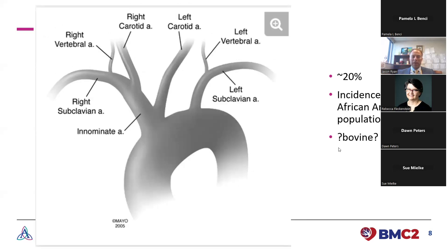The next most common is what's known as a bovine arch, which happens in about 20% of individuals. In this configuration, there are only two trunks coming off the aortic arch — the innominate artery, which also gives off the left carotid, and then the left subclavian. So rather than the left carotid coming directly off the aorta, it comes off this common trunk. Interestingly, the term 'bovine' is a misnomer — cows actually have one giant trunk giving branches to all their arteries, which doesn't happen in humans.